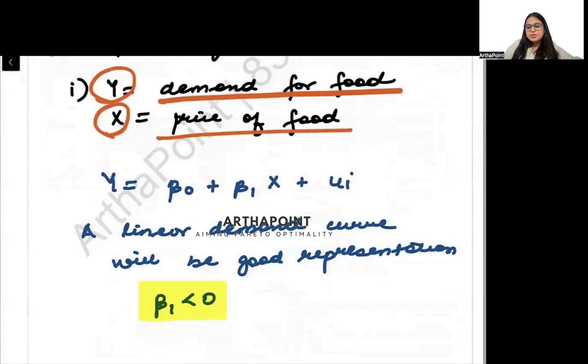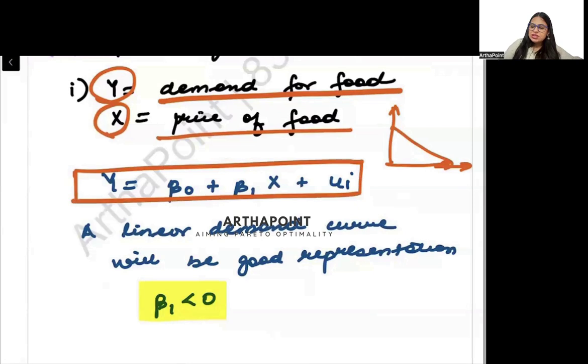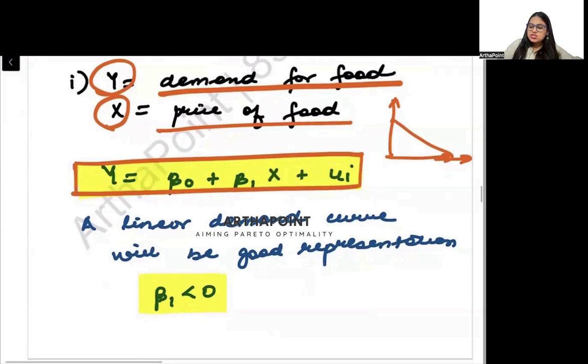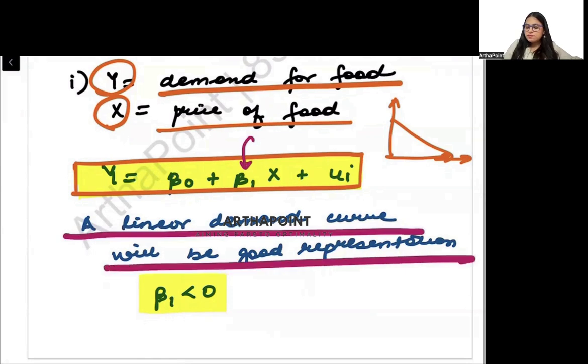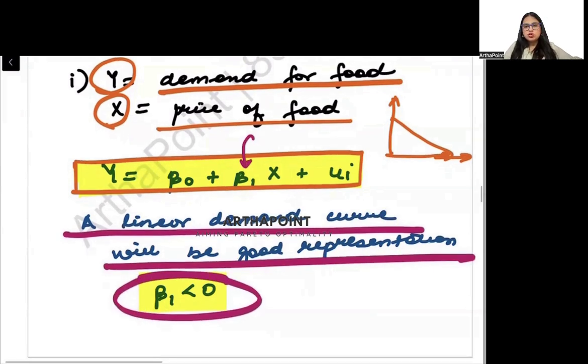We know that usually the demand curve is downward sloping, and a linear demand curve means I can represent it using a linear equation where I have to consider that the slope should be negative. So it will be a linear demand curve where I need to ensure that beta 1 should be less than 0.